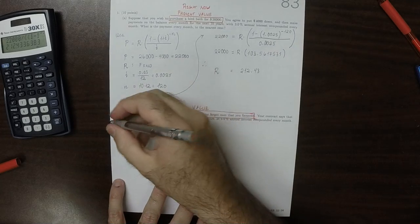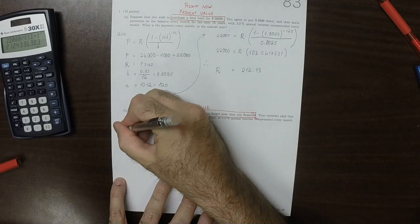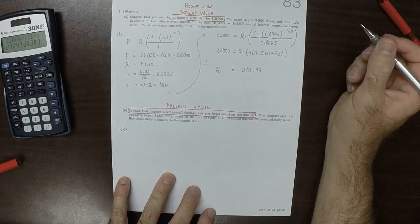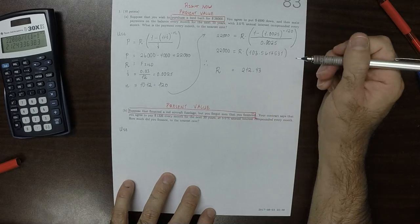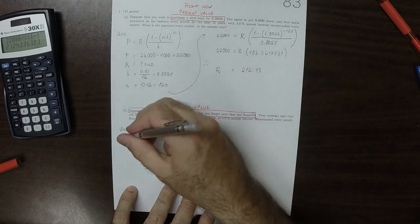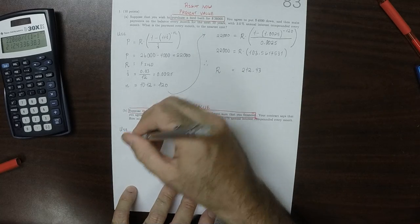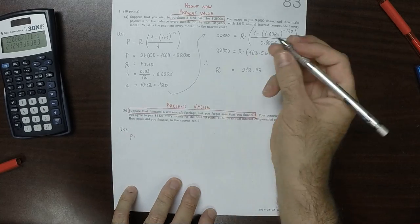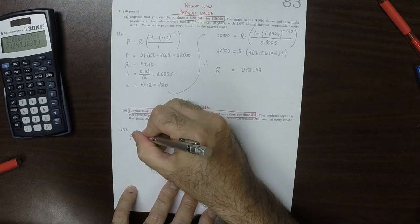So, again, we're going to use the present value formula, except you forgot the sum that you financed. How much did you finance? Well, P, that's the present value. That was the value at the time of the exchange. This is what you're supposed to find.